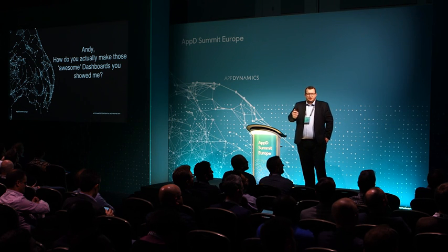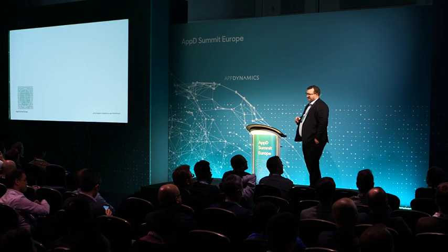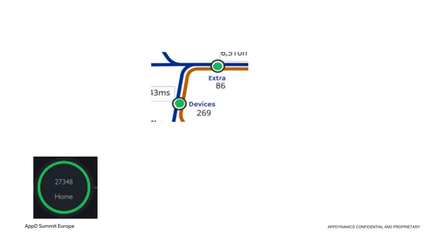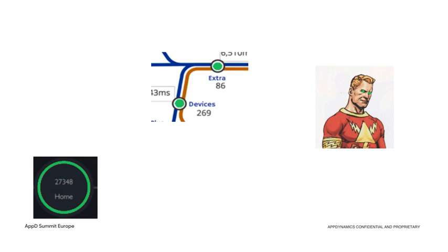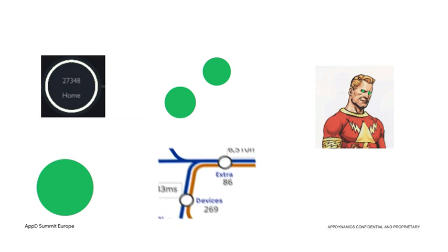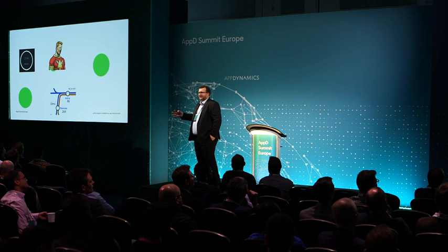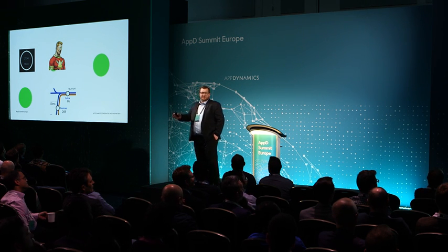I've shown you a bunch of dashboards. The first question is: how are we going to start making these? You might say: my controller doesn't have those cool-looking widgets — how do we make things like the ring indicator, the small icon, and Lash Lightning? I definitely don't have a Lash Lightning widget. These are all just normal images over the top of the standard health rule widget. All we do is create an image with a transparent zone and put that over the top of an existing health rule indicator.